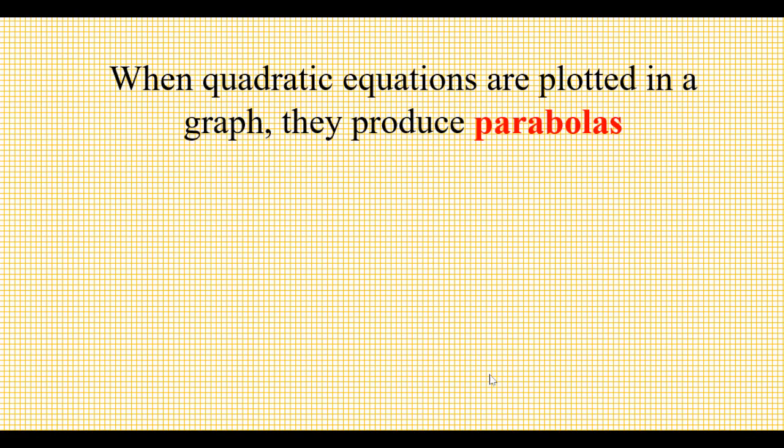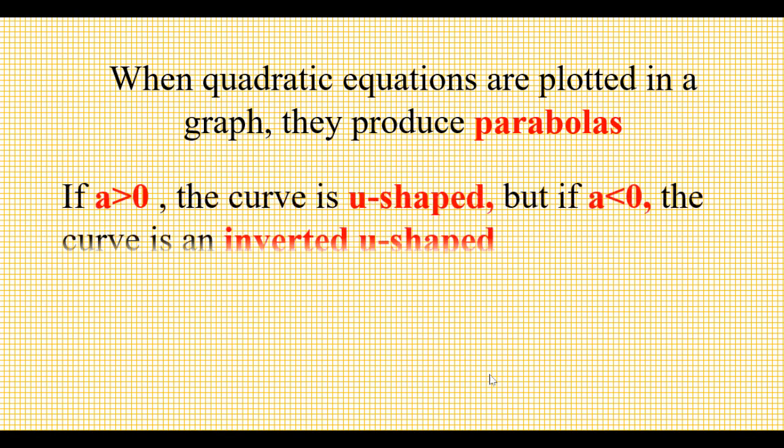When quadratic equations are plotted in a graph, they produce parabolas. If a is greater than 0, the curve is u-shaped, but if a is less than 0, the curve is an inverted u-shape.